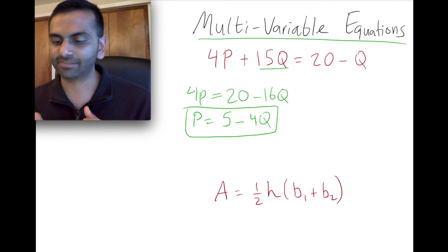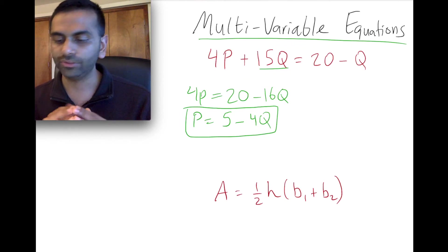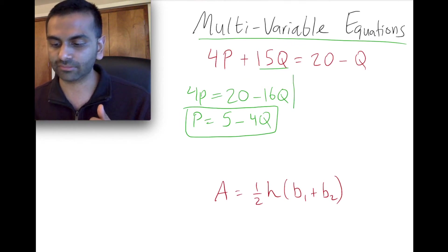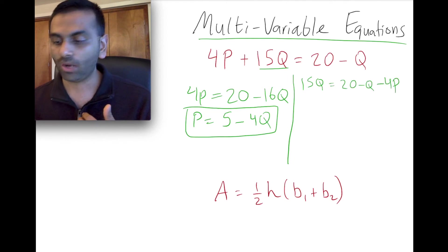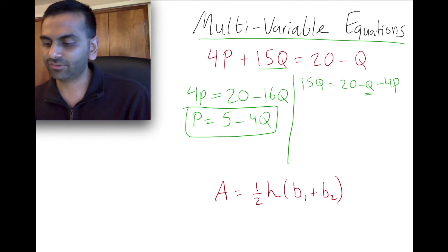What if, on the other hand, for this problem, you were asked to solve for Q? Well, now you want Q by itself on one side, right? So there's many equally correct ways to go about it. But one thing is to say, I want to keep this Q on this side, so I'm going to subtract the 4P now. So I have 15Q, and I subtracted the 4P, so I have 20 minus Q, but then minus the 4P. Oh wait, but there's a Q on this side too, and I want to bring all the Qs by itself. So I'm going to add Q to both sides to make that 16Q equals 20 minus 4P.